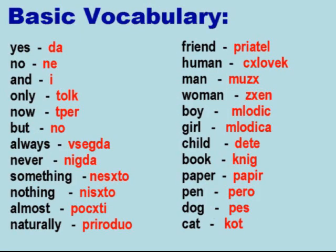Basic Vocabulary: Yes — Da. No — Ne. And — I. Only — Tok. Now — Tper. But — No. Always — Vsegda. Never — Nikda. Something — Nešto. Nothing — Ništo. Almost — Počti. Naturally — Prirodvo. Friend — Prijatel. Human — Človek. Man — Mož. Woman — Žen. Boy — Mlodic. Girl — Mlodica. Child — Dete. Book — Knig. Paper — Papir. Pen — Pero. Dog — Pes. Cat — Kot.